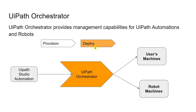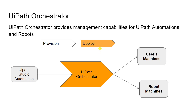The second capability is deployment. For example, if you have built an automation in UiPath Studio, you can publish it to UiPath Orchestrator. When you publish your automation project, it gets deployed or pushed to UiPath Orchestrator in a NuGet package (.nupkg) format. From there, you deploy it to the machine where it's supposed to run — a user machine for an attended scenario, or a robot machine for an unattended scenario.